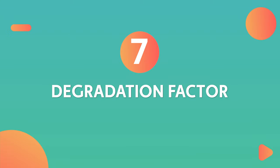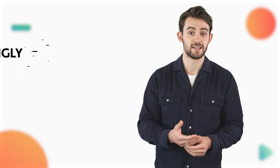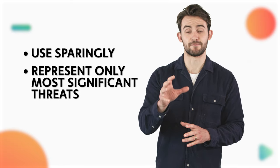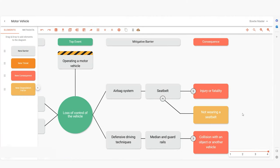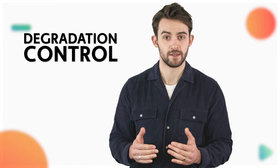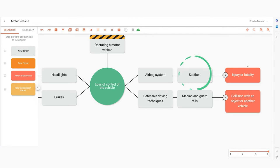There's one more component of a bowtie diagram that we haven't yet covered. Number seven: degradation factor, also known as escalation factors. These are conditions or situations that can compromise the effectiveness of barriers. They should be used sparingly and represent only the most significant threats to barrier integrity. In our road safety scenario, a degradation factor might be not wearing a seatbelt, which could lead to the failure of the 'wearing a seatbelt' barrier. Each degradation factor should be equipped with its own barrier, known as a degradation control. In our example, a degradation control to not wearing a seatbelt could be a seatbelt alarm, which reduces the chances of the barrier failing.